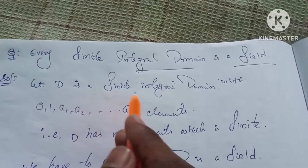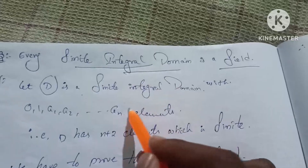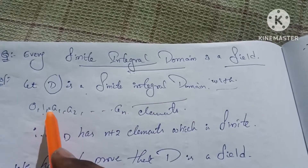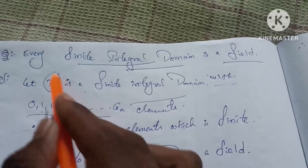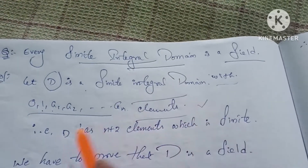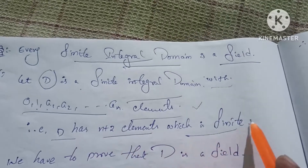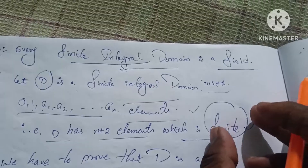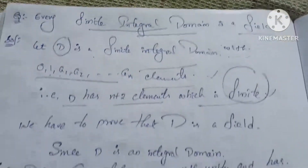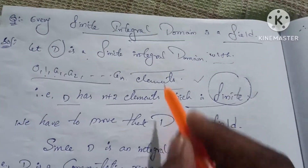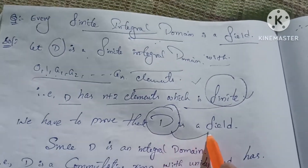Let D be a finite integral domain with elements 0, 1, a1, a2, ..., an. So D has n+2 elements, which is finite. We have to prove that D is a field.